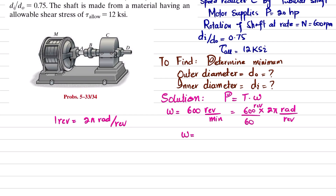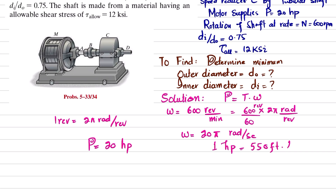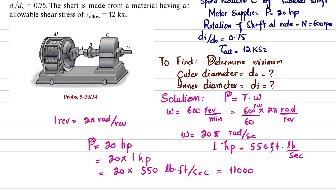So ω equals 600 times 2π divided by 60 seconds, which gives ω equal to 20π radians per second. Also, power is given as 20 horsepower, and one horsepower equals 550 foot-pounds per second. So 20 horsepower equals 11,000 foot-pounds per second.